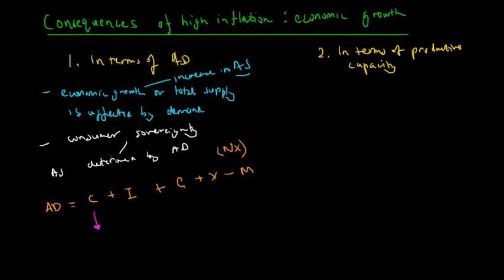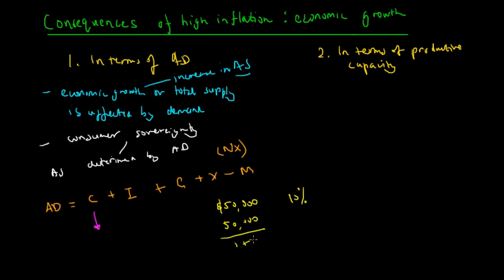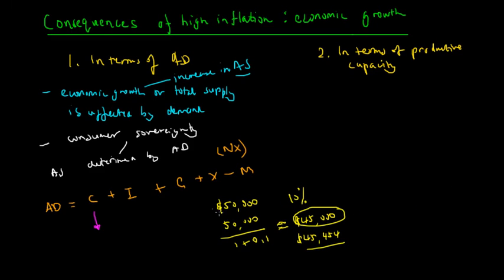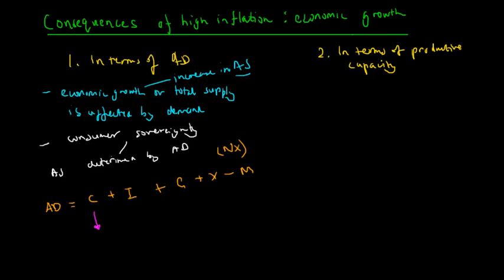For example, if we have $50,000, we can buy $50,000 worth of goods and services. If inflation is 10%, that $50,000 can only buy 50,000 divided by 1.1, which equals around $45,000. So using the same amount of money, we can buy a smaller basket of goods and services, meaning consumption would go down overall.